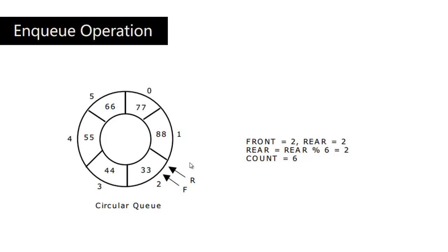If I enqueue 77 and 88, the current status of the circular Queue is that front and rear are both pointing to the same location, which is the 2nd index. Count is 6 — the circular Queue is now full. We cannot insert any more elements. If we want to insert, we must first delete elements from where the front pointer is pointing.